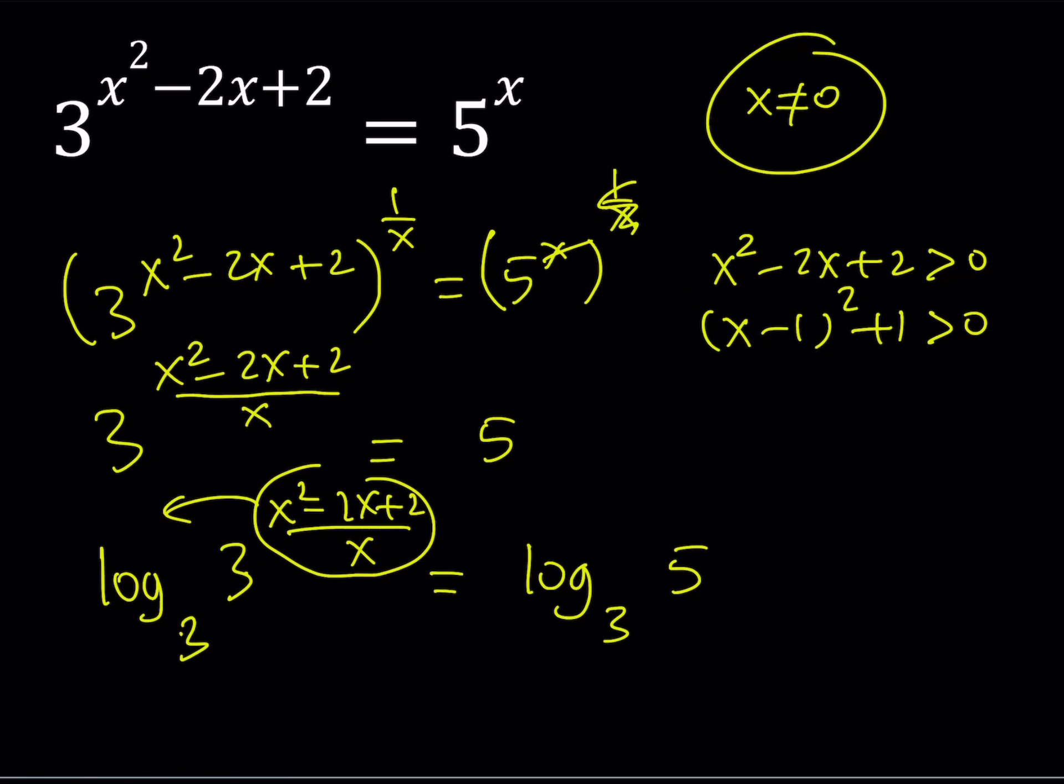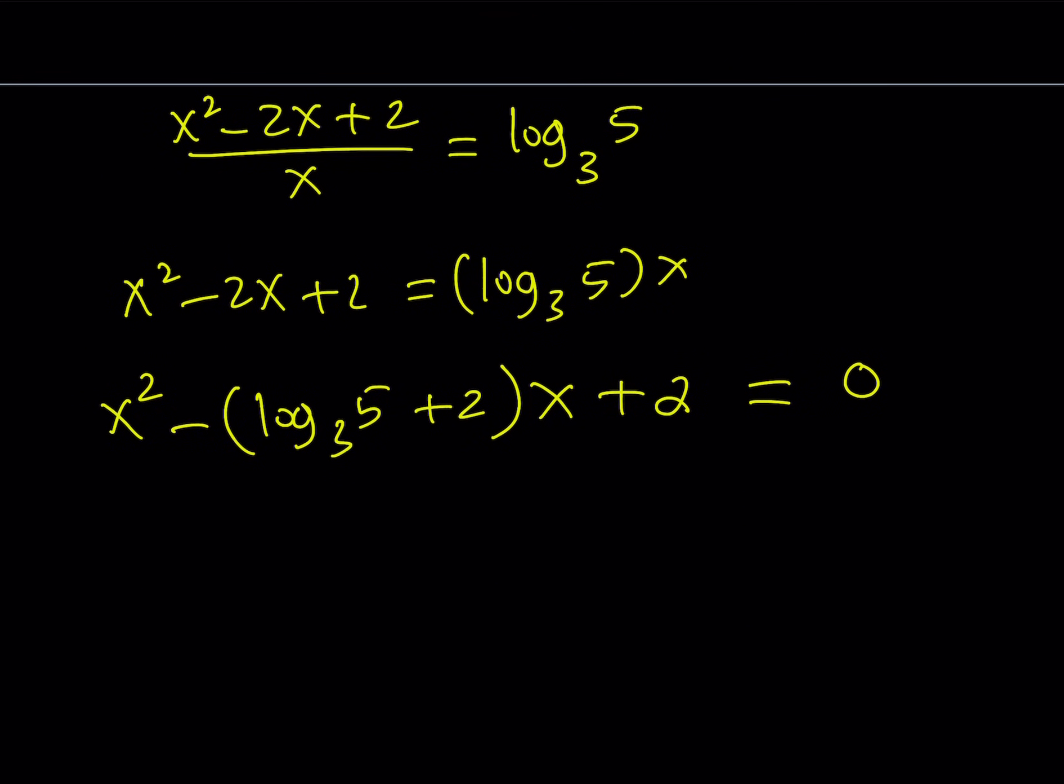Well, if you think about it, 3 to the power something and the power is always positive. That means the expression on the left hand side is always greater than 1, which means 5 to the power x is also greater than 1, which means that x must be positive. So our x values has to be positive. Let's just take note on that one.